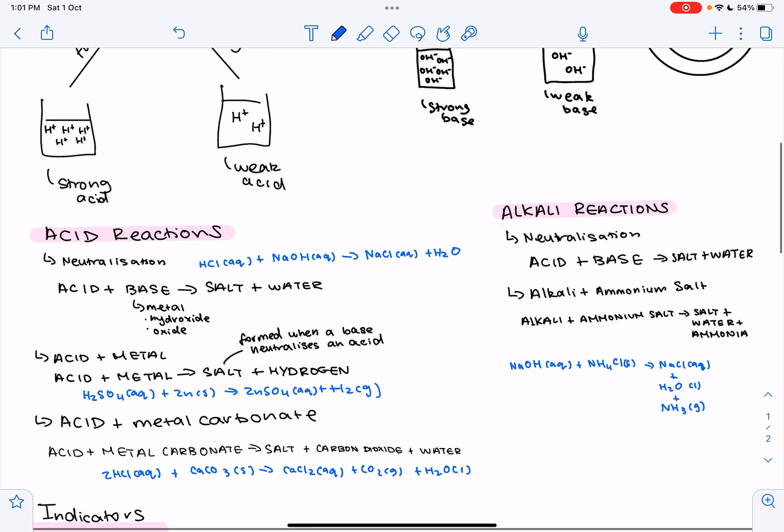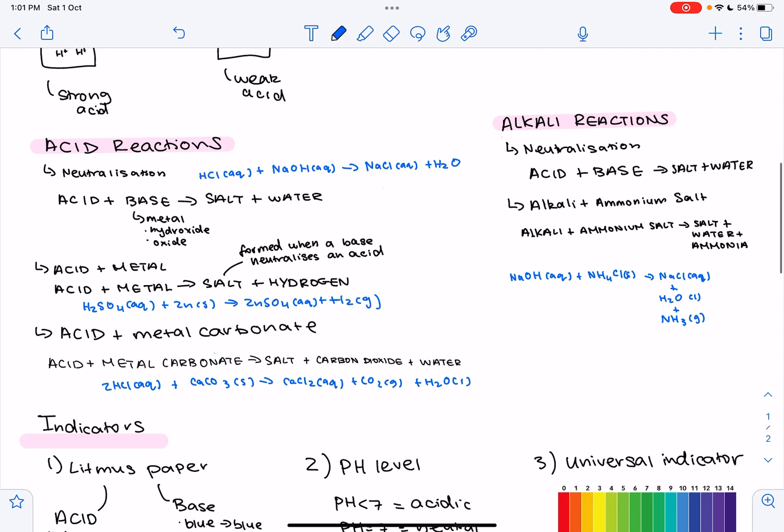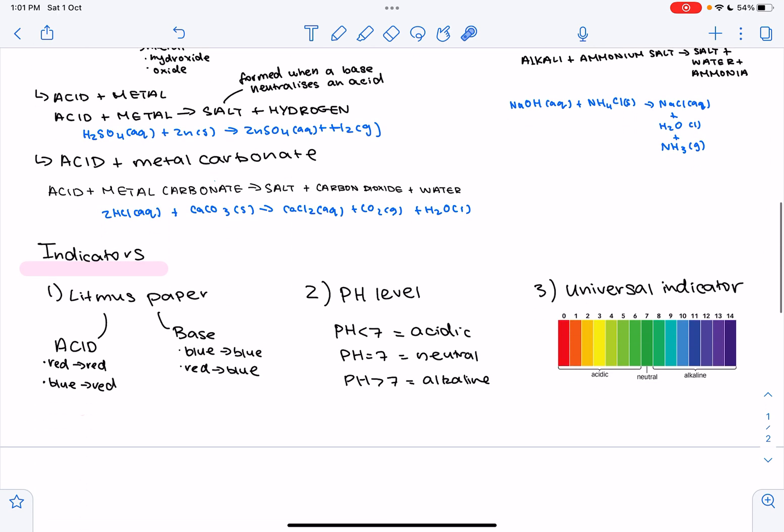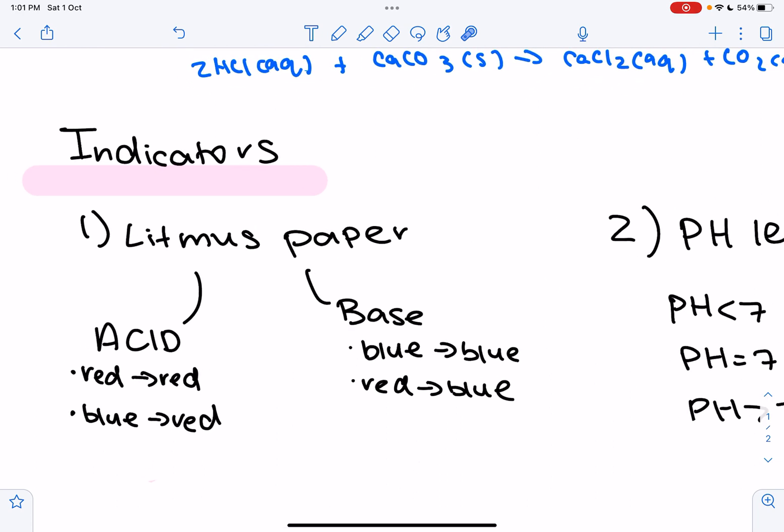So those are the reactions we're going to look at for both acids and alkalis. Lastly, we're going to talk a little bit about indicators. So the first indicator, which we may see a lot, is the use of litmus paper.